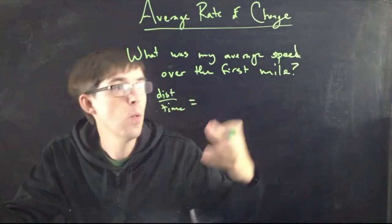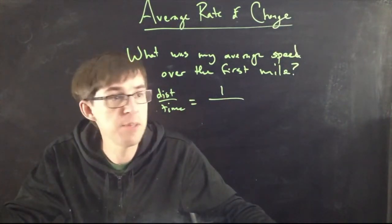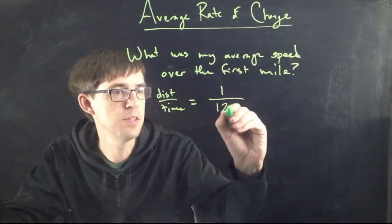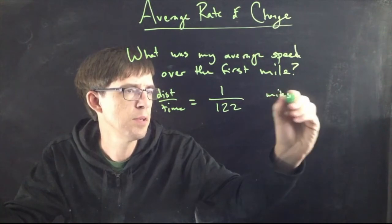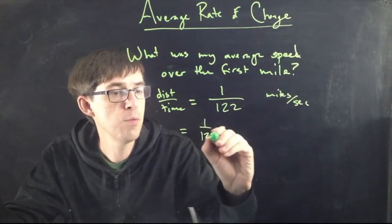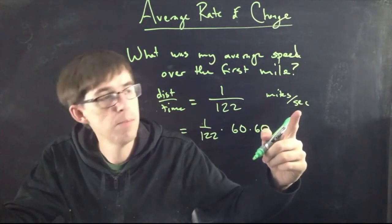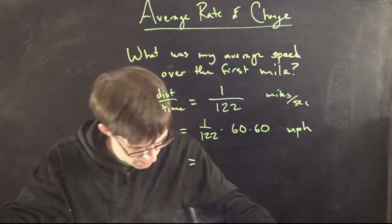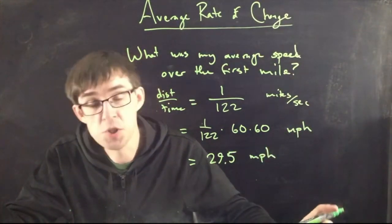So over the first mile: distance over time. The distance was one mile, so that's just one. For the time, how long did it take to go the first mile? Looking at the chart, mile one occurs at time 122 seconds. So this is 1 divided by 122 miles per second. To convert to miles per hour, multiply by 60 times 60. Plugging that into a calculator gives 29.5 miles per hour — a reasonable average speed.